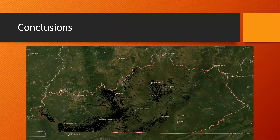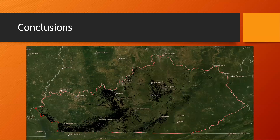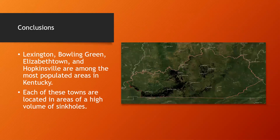Here you can see the sinkholes shown in black on an imagery layer map. Some areas of interest are Lexington — where I live — Bowling Green, Hopkinsville, and Elizabethtown. These are all inside areas of high sinkhole concentration, and they also happen to be among the top 10 most populated cities in Kentucky. With such high populations, there is significant risk for damage to infrastructure, roads, and residential areas due to sinkholes.